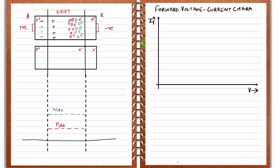Hello friends, and welcome to the power electronics course in the Electrical is Easy channel. In the previous video, we have seen the concept of conductivity modulation. In this video, we will look at the forward voltage-current characteristics of the power diode. Before beginning that, let us revisit the charge distribution graph of the power diode, which will help in understanding the forward voltage-current characteristics.